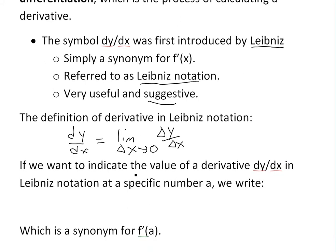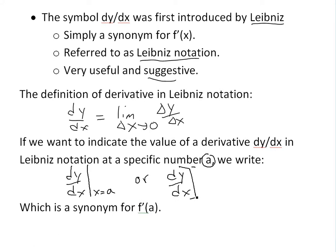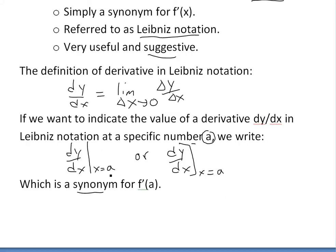If we want to indicate the value of a derivative dy over dx in Leibniz notation at a specific number a, we can write dy over dx with a vertical bar down at x equals a. Or we can write dy over dx with a bracket and x equals a. This just means the derivative at a, which is the same thing as f prime of a — the derivative where x equals a.